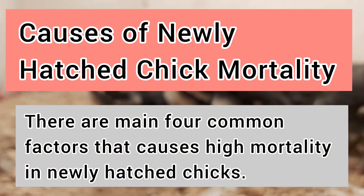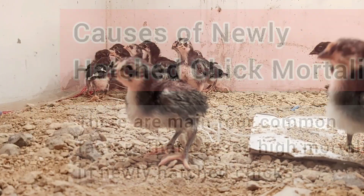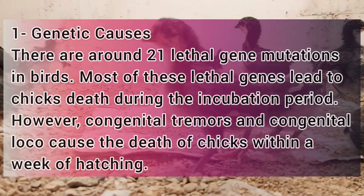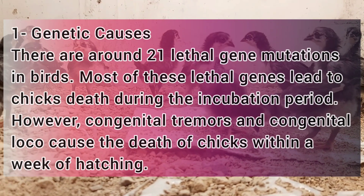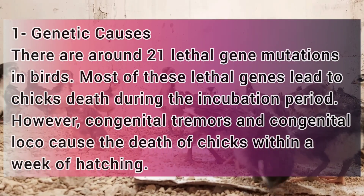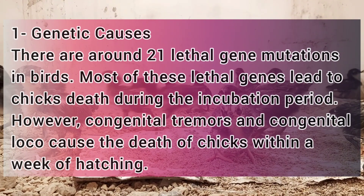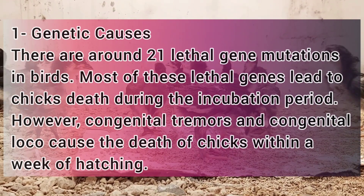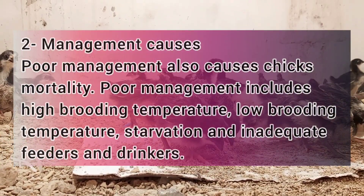There are four main common factors that cause high mortality in newly hatched chicks. Number one: genetic causes. There are around 21 lethal gene mutations in birds. Most of these lethal genes lead to chick death during the incubation period. However, congenital tremors and congenital loco cause the death of chicks within a week of hatching.